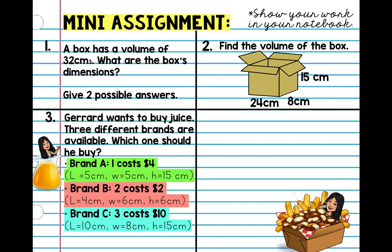Number three, Mr. Gerard wants to buy some juice. Three different brands are available. Which one should he buy? So, you're going to figure out brand A, the volume of that for one, it's $4. Brand B, two of them is $2, and this is the dimensions. Brand C, you have three for $10, and these are the dimensions. So, we're going to figure out which one is his best option.